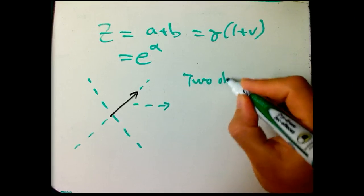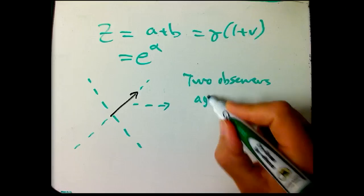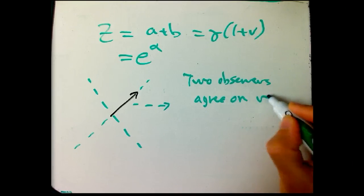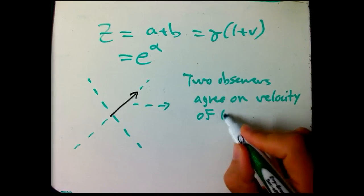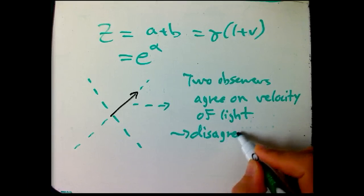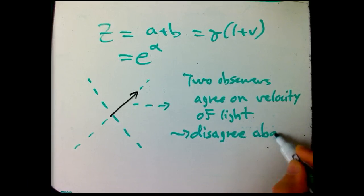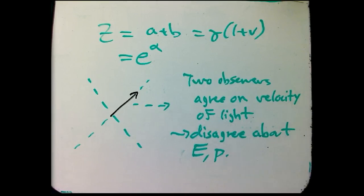two observers will agree on the velocity of light, that's the non-Newtonian thing, but they will disagree about its energy and momentum.